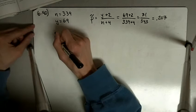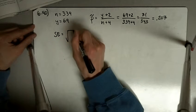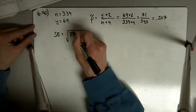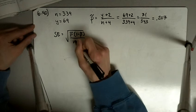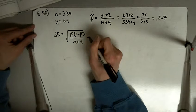The standard error is given by the square root of p̂ times (1 minus p̂) divided by (n + 4).